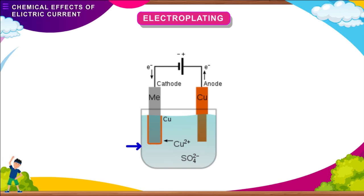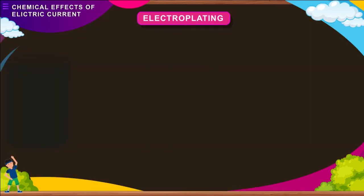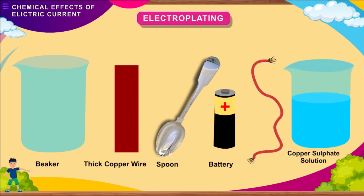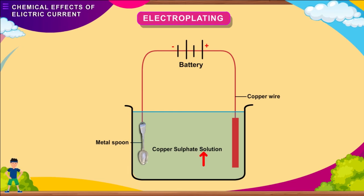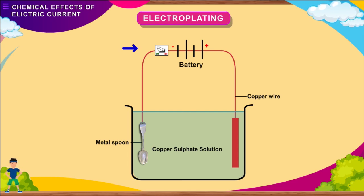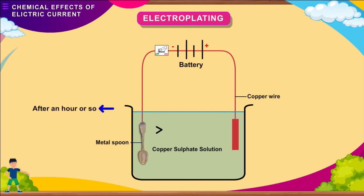Here is an activity to show electroplating of copper. Take a glass beaker, thick copper wire, a metal spoon, a battery, copper sulphate solution, and copper wires. Fill the beaker with copper sulphate solution. Flatten the copper wire and connect it to the positive terminal of the battery. Connect the spoon through a switch to the negative terminal of the battery. Dip both of them in the beaker containing copper sulphate solution, making sure they do not touch each other. Switch on the current and let it pass through the solution; after an hour or so, a layer of copper will be deposited on the spoon, showing that copper gets transferred from one electrode to the other.